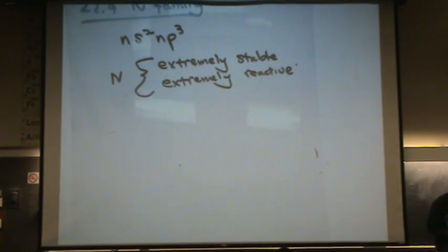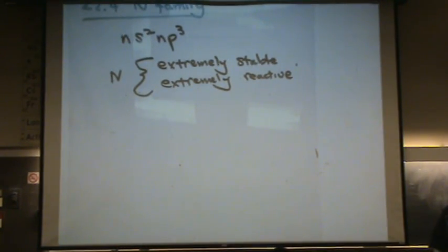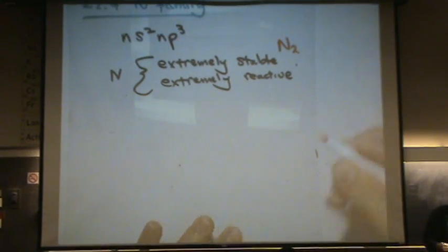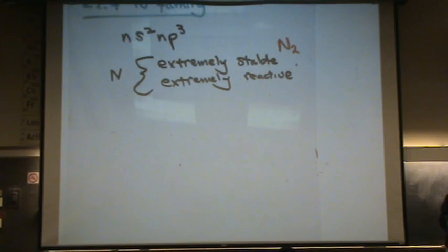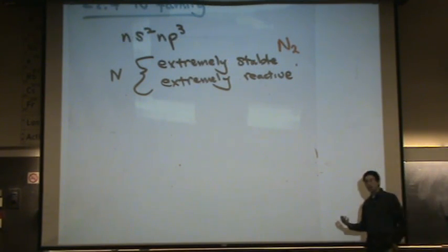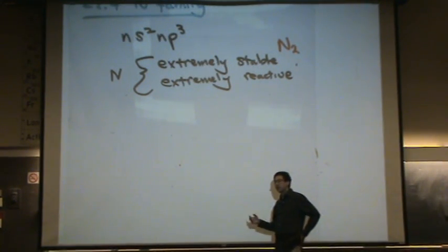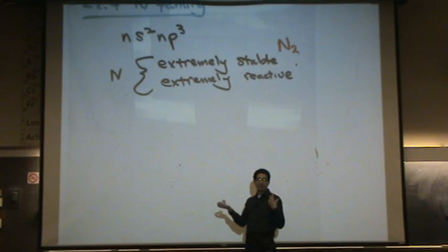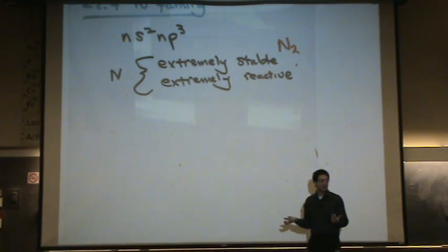So the extremely stable, I gave you an example of N2. It's basically inert, N2 gas. It can be used as a diluent. So if our atmosphere was all oxygen, you would be walking around and things would be catching on fire around you through spontaneous combustion.